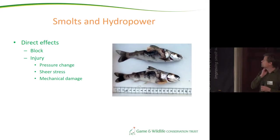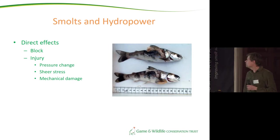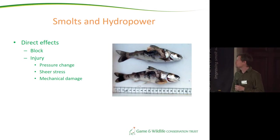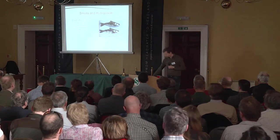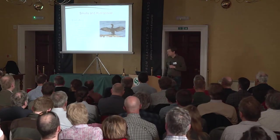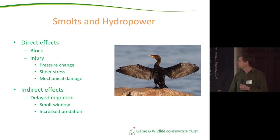If we focus on smolts, there are classic reported direct effects: the migration path may be blocked or they might have to go through the turbine. Direct effects can include injury caused by pressure changes, changes in shear stress, or pure mechanical damage. However, there can also be indirect effects in terms of delayed migration — the smolt window we've talked about a lot — and they might create extra opportunities for predators naturally present in the catchment.